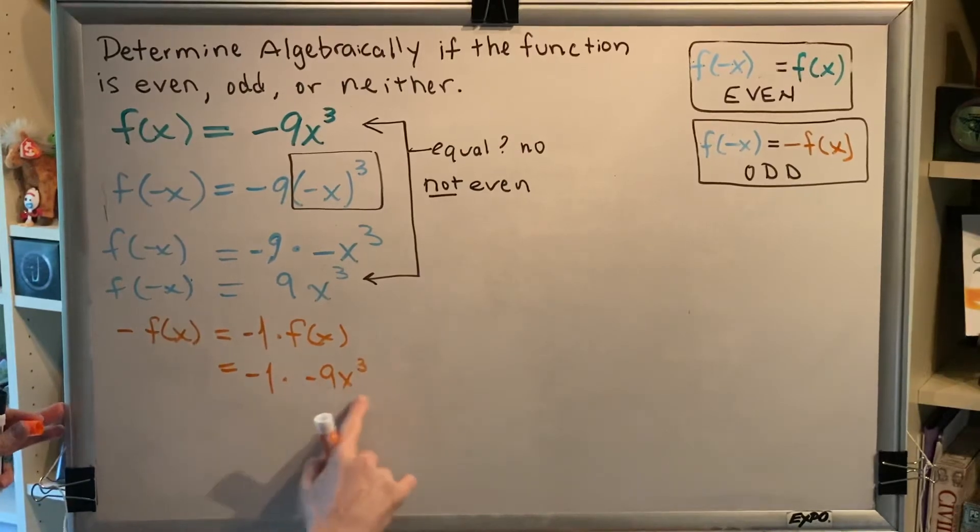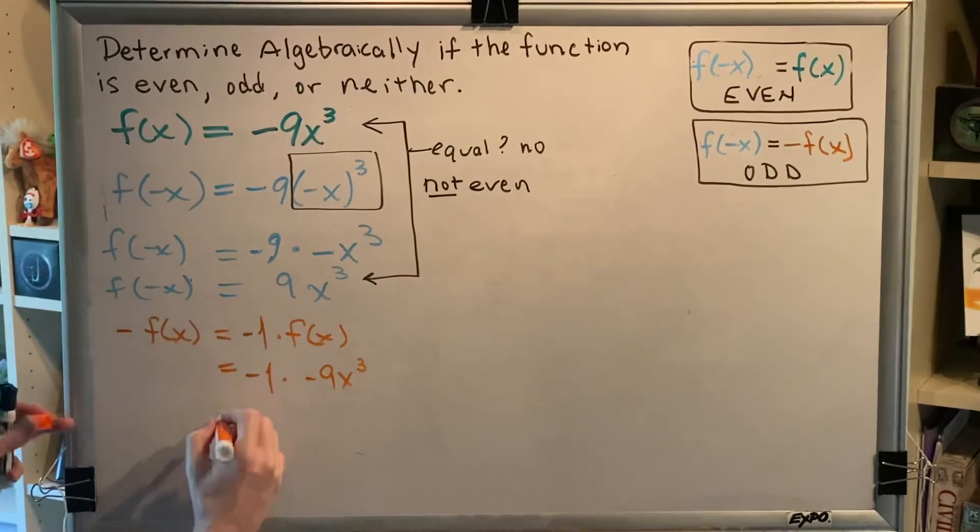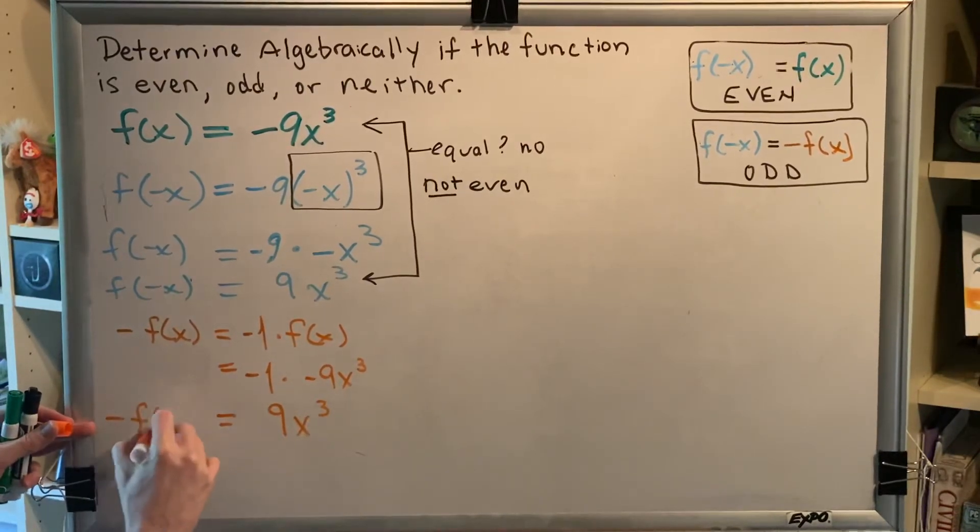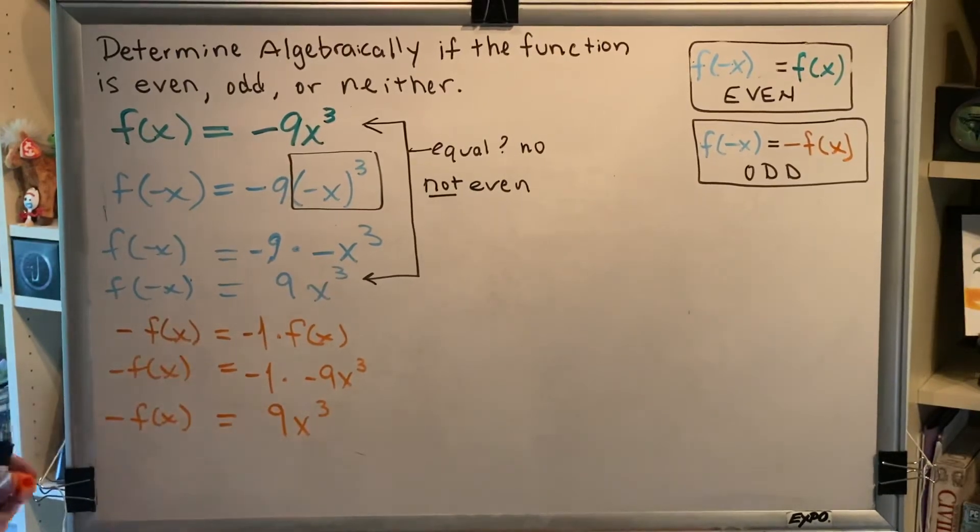Notice that because this is just one term, parentheses are not necessary here. And then a negative times a negative is a positive. So, we get 9x cubed. So, negative f of x is equal to positive 9x cubed.